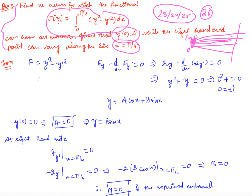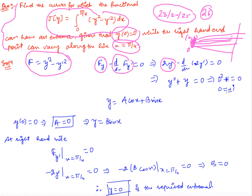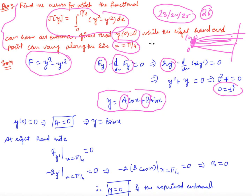First, we solve Euler's equation. Here f = y² − y'². The Euler equation f_y − d/dx(f_{y'}) = 0 gives 2y − d/dx(−2y') = 0, which simplifies to y + y'' = 0. The characteristic equation D² + 1 = 0 gives D = ±i, so the general solution is y = a cos x + b sin x. Applying y(0) = 0 gives a = 0, leaving y = b sin x.